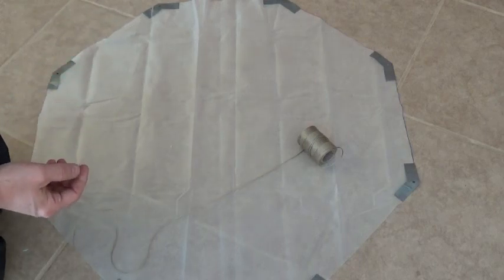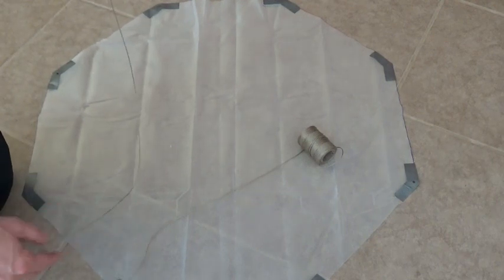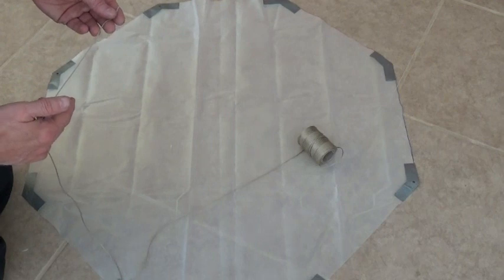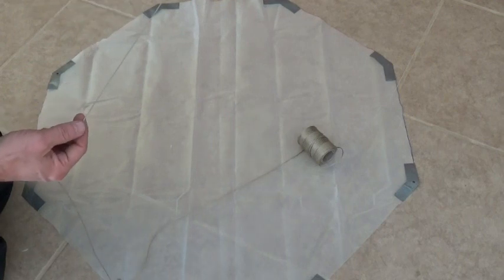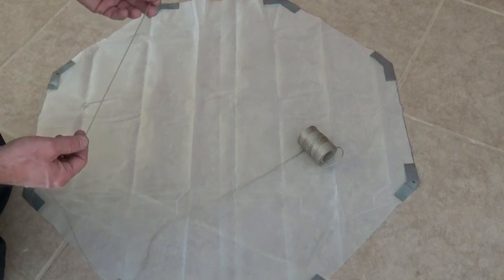Now as far as string length, I like to start out with strings that are about 25% longer than the width of the parachute, so this is a 34 inch parachute, so I'm going to cut eight strings that are 42 inches long. It's easy to make them shorter later, it's a lot harder to make them longer.